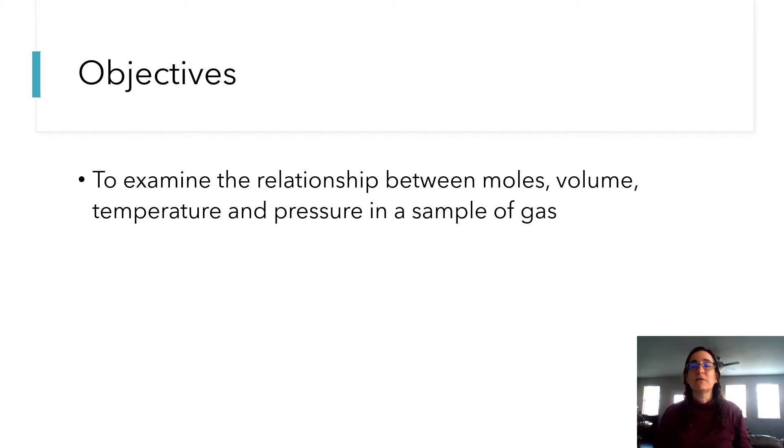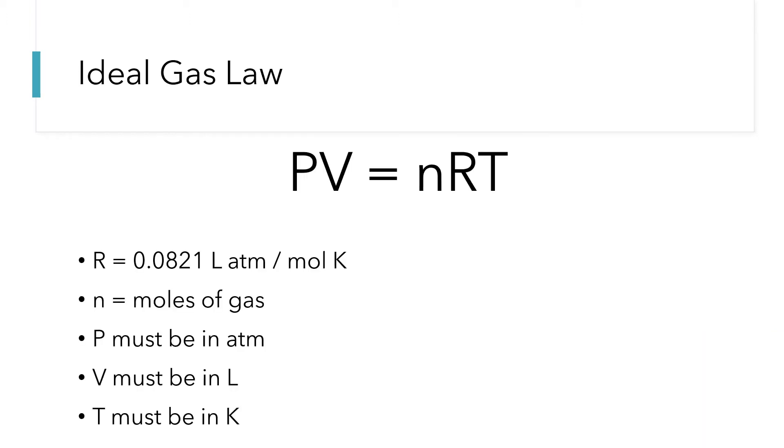This relationship is given by something known as the ideal gas law. The ideal gas law says PV equals nRT. Some of my students in the past have called this PVNRT to help them remember the equation.